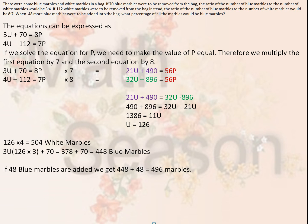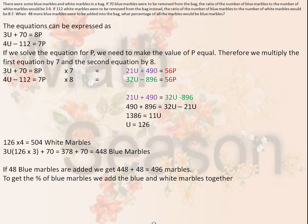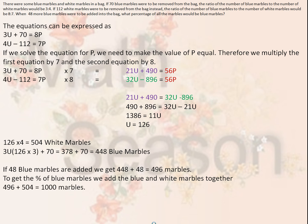If 48 blue marbles are added, we get 448 plus 48 equals 496 blue marbles. To get the percentage of blue marbles, we add blue and white marbles together: 496 plus 504 gives us 1000 marbles total. Therefore, 496 divided by 1000 equals 49.6% of the marbles are blue.